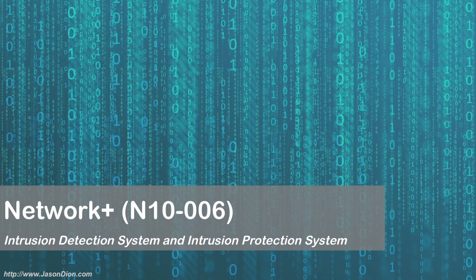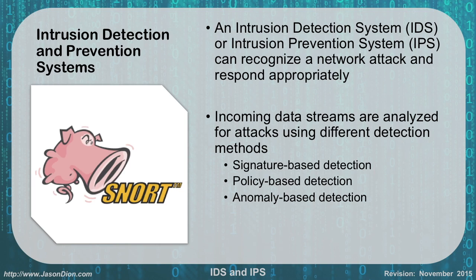Intrusion detection systems and intrusion protection systems are used to recognize network attacks and respond appropriately. The incoming data to your network is analyzed for attacks using a different detection method, depending on how you configure your IDS or IPS. You can use either signature-based, policy-based, or anomaly-based detection, and we'll describe each of those in more detail shortly.